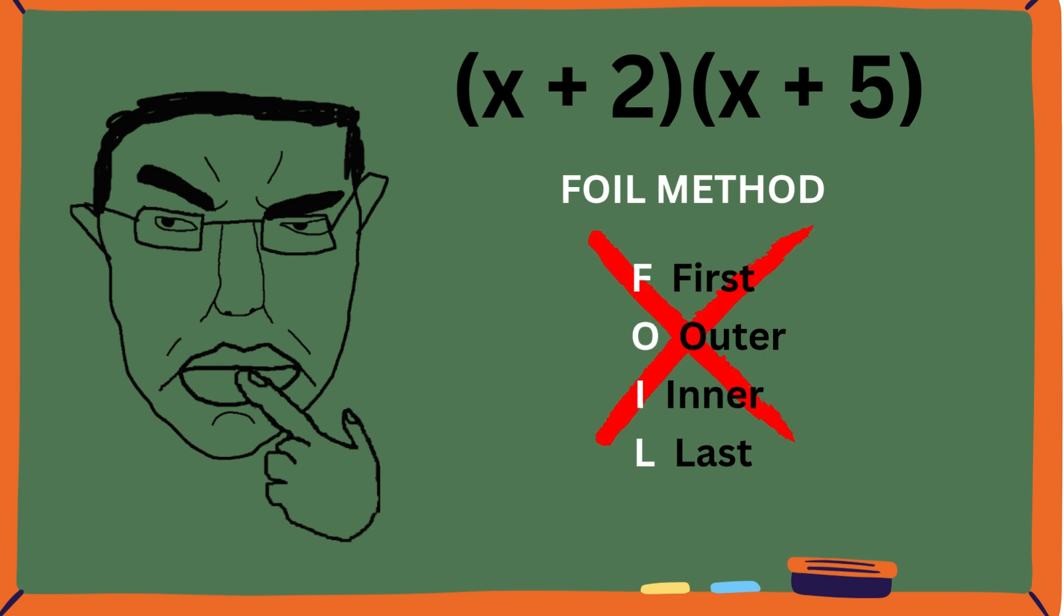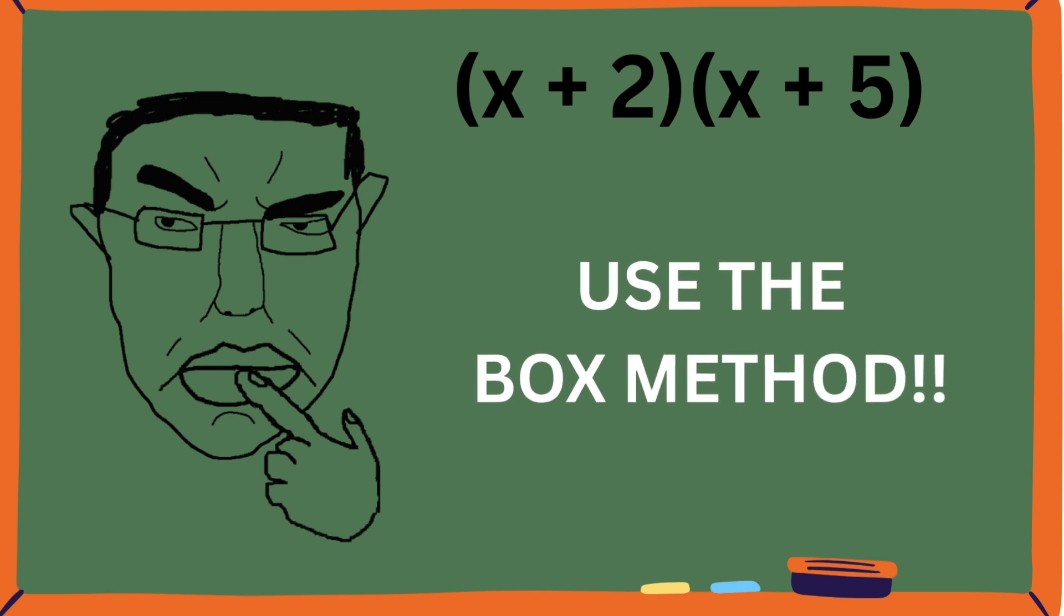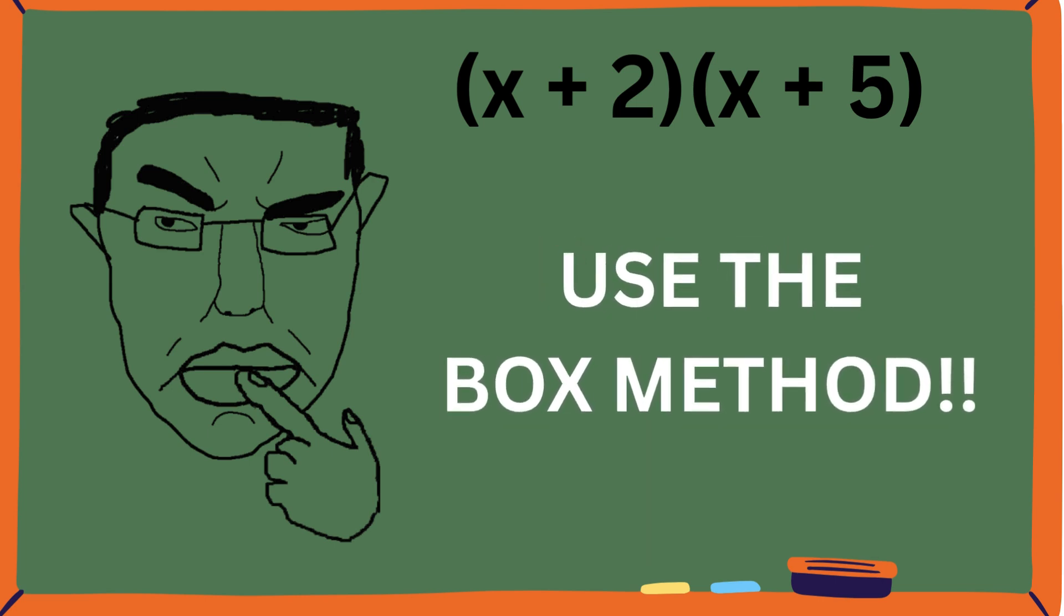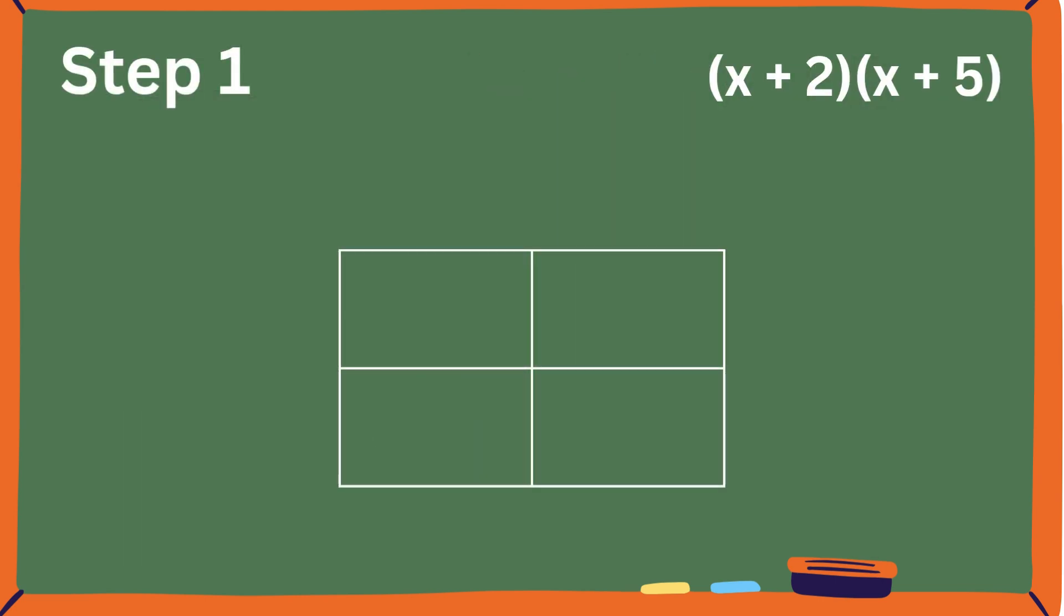Instead, let me show you the box method, also known as the area method. Here's the trick: turn the multiplication into a visual problem. Draw a 2x2 box. Write the first binomial across the top, x and 2. Write the second binomial down the side, x and 5.